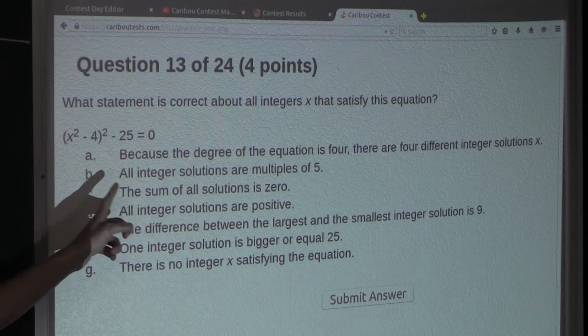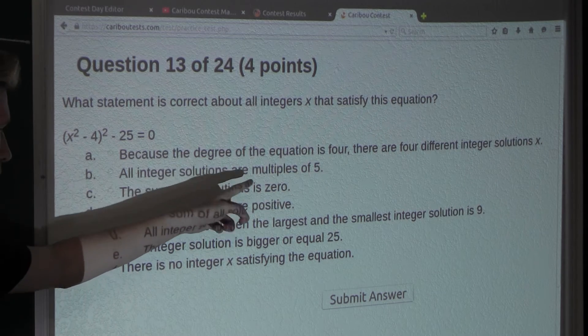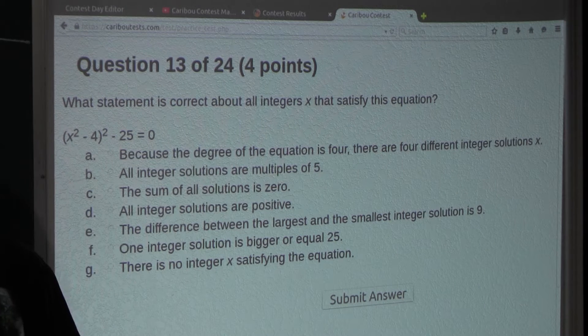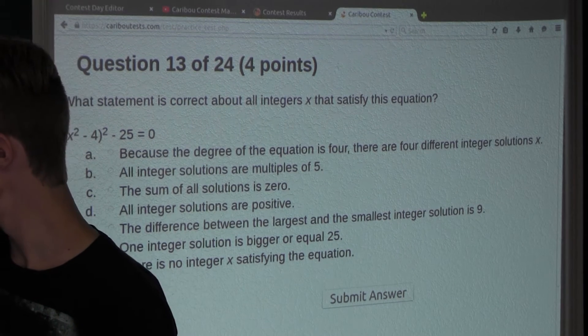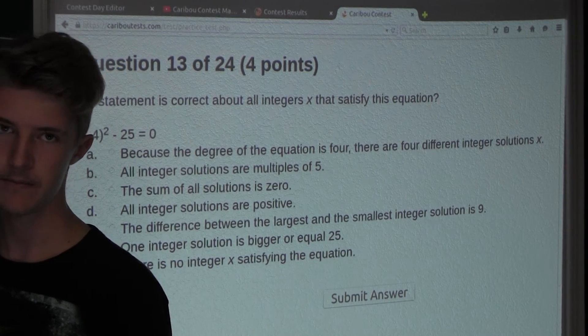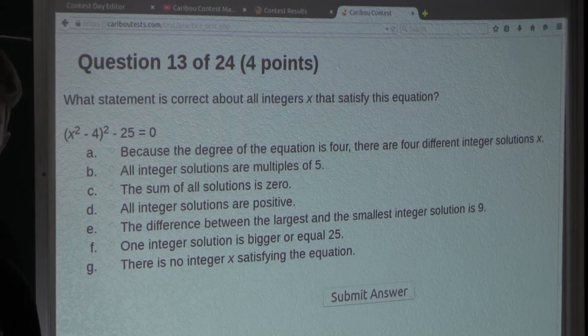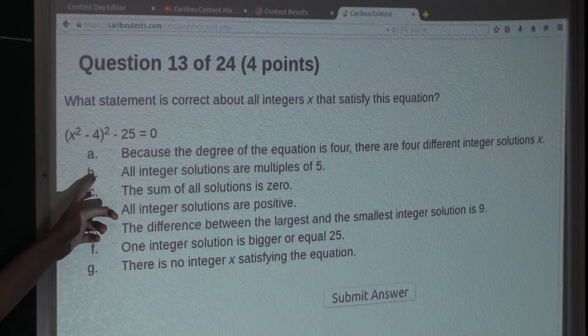Option B: All integer solutions are multiples of 5. Well, obviously, our two solutions are negative 3 and 3, and they're obviously not multiples of 5. So option B is also false.